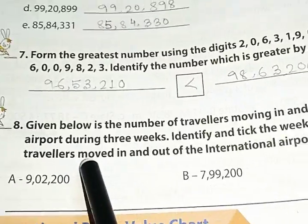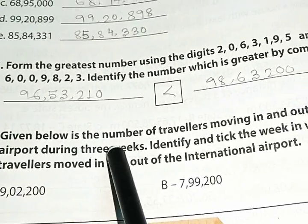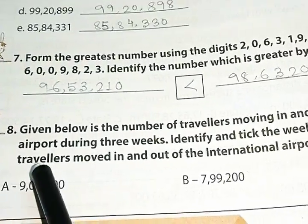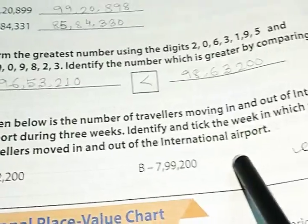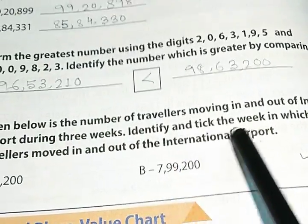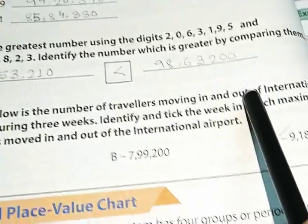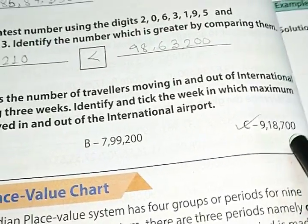Again, number 8. Given below is the number of travelers moving in and out of international airport during three weeks. Identify and tick the weeks in which maximum number of travelers moved in and out of the international airports. There are three options. Among the options, which is the correct answer? In which week the number of travelers is most? So, the answer will be C, 9,18,700.